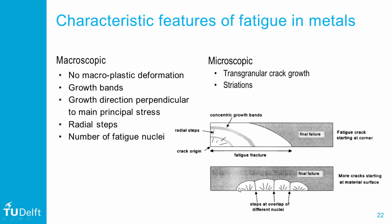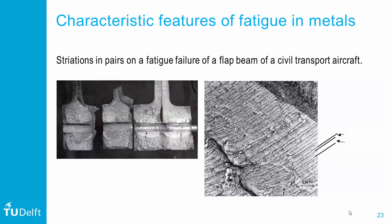In general, fatigue failures in metals are characterized at the macroscopic level by the absence of plasticity, the formation of growth bands depending on the load spectrum applied, crack growth perpendicular to the principal stresses, and a number of crack nuclei depending on load magnitude. In case of multiple crack nuclei, radial steps or ratchet marks are formed. At the microscopic level, cracks grow through grains while forming little plastic ridges called striations. A practical example is the fatigue failure of a flap beam on a civil transport aircraft, which reveals striations occurring in pairs — each time a small and a large striation together — corresponding to take-off flap position and the larger landing load cycle.